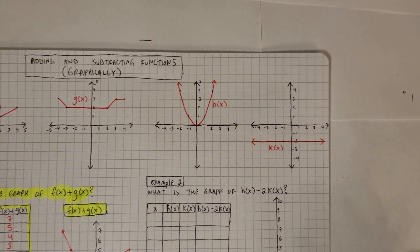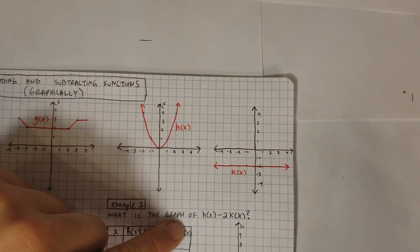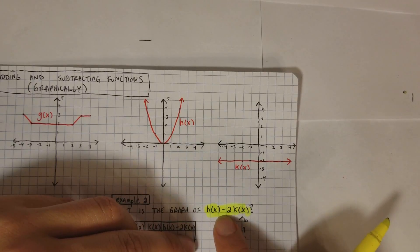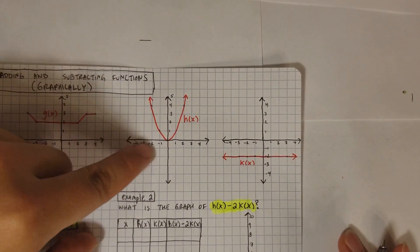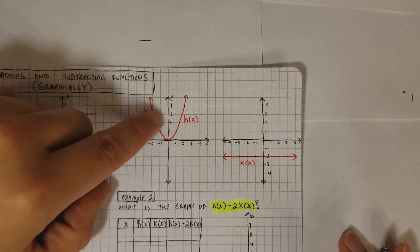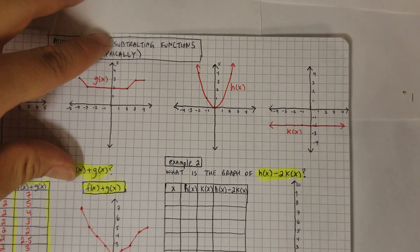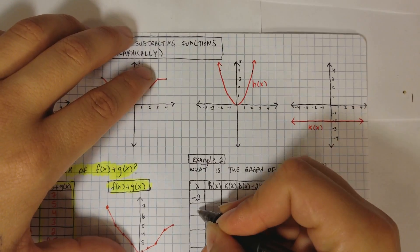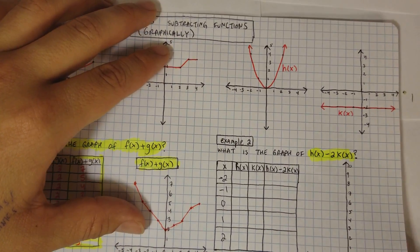Let's do one more for comfort, in case they switch it up and give you something like this. h(x) is this function, k(x) is this function, and they want us to figure out the graph of h(x) minus 2 times k(x). We need to figure out where these graphs actually exist. I'll play it safe and make the table go from negative 2 to positive 2, since that's where I see the critical values.